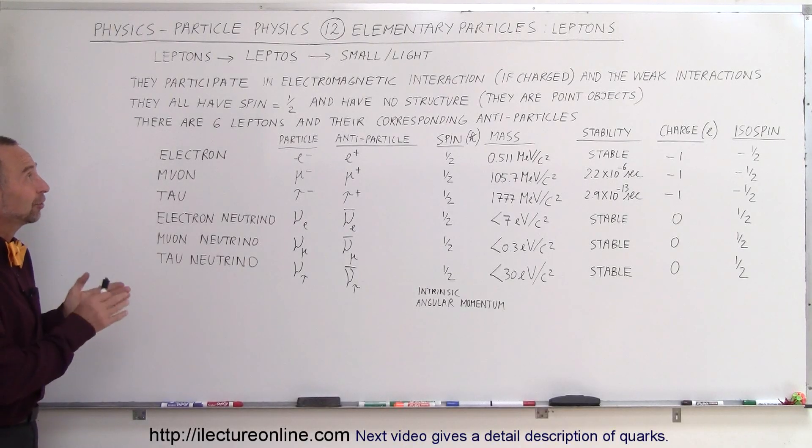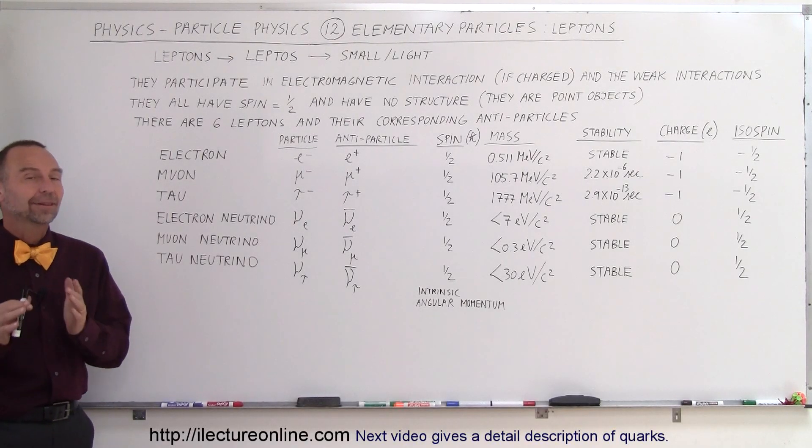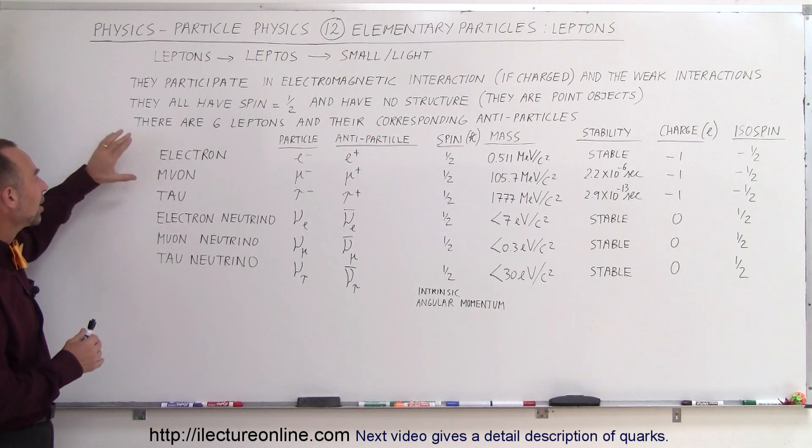Welcome to our lecture online and now we're going to take a closer look at the elementary particles called leptons. So we know that there are six leptons and here they are.